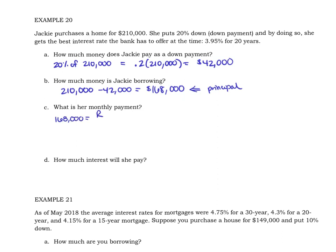The regular monthly payment is what we're looking for. The formula uses the principal times one minus the quantity one plus the interest rate — 3.95 percent — over 12, raised to the negative 12 times 20 years, all divided by the interest rate over n, the number of payments we're making in a year.